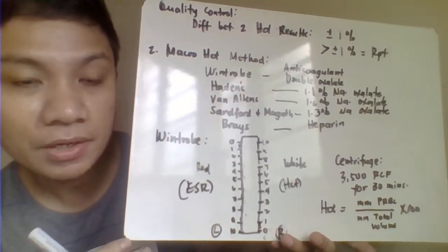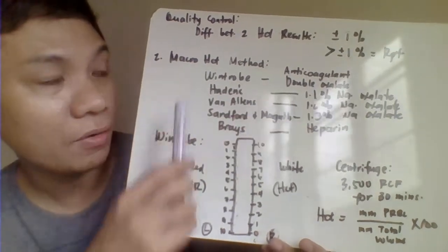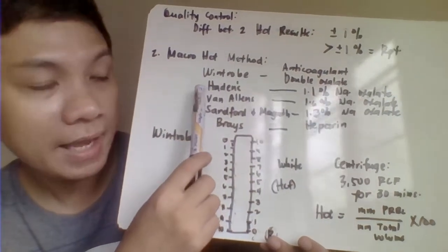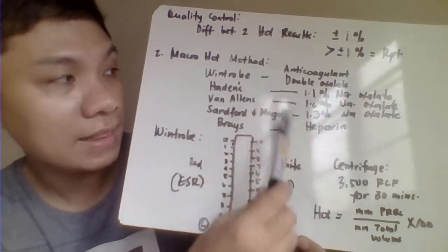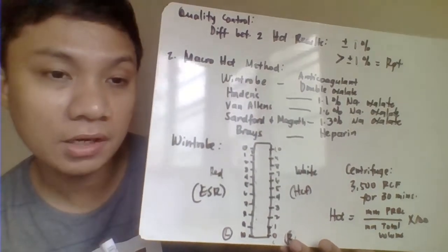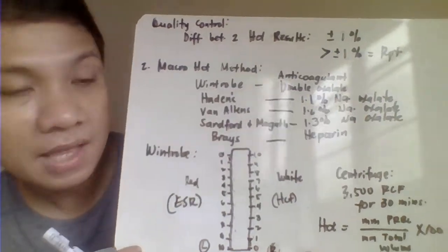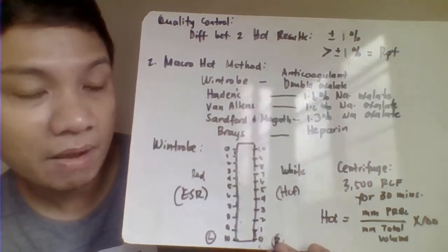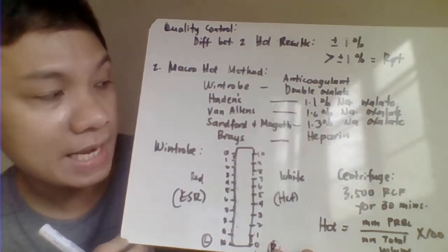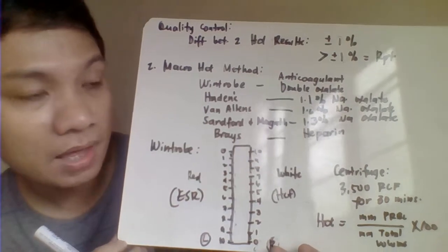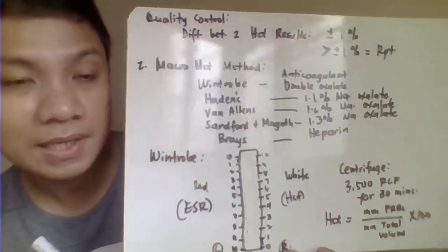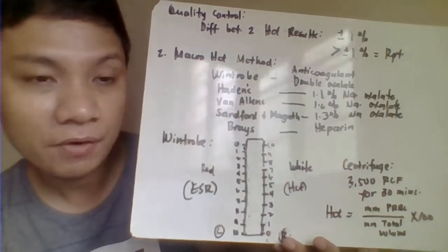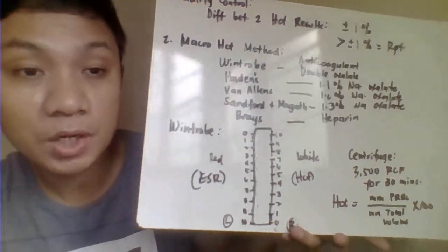Another method is the macro-hematocrit method using the Wintrobe tube. Different anticoagulants are used depending on the method: Wintrobe uses double oxalate, Haden uses 1.1% sodium oxalate, Van Allen's uses 1.6% sodium oxalate, Sanford and Magath use 1.3% sodium oxalate, and the Brace method uses heparin.